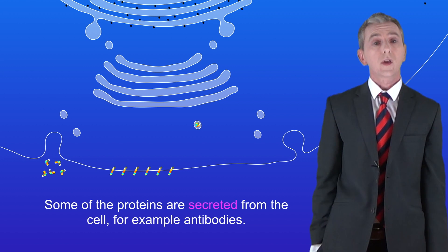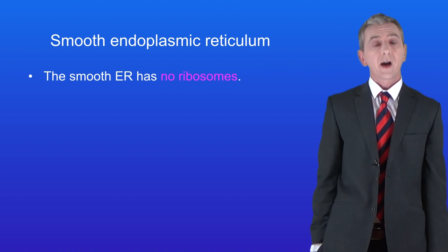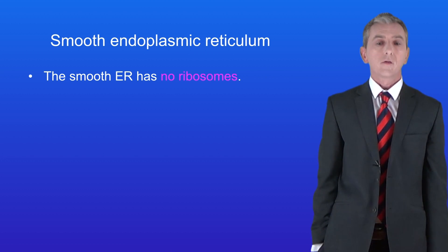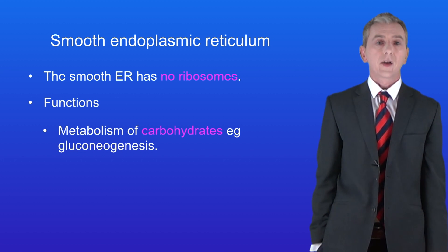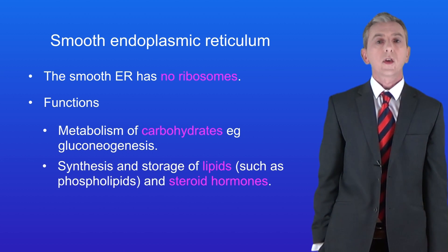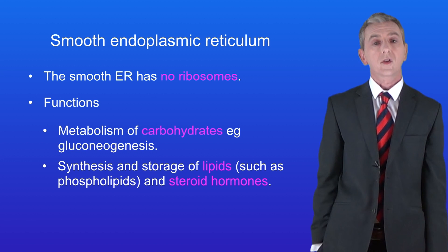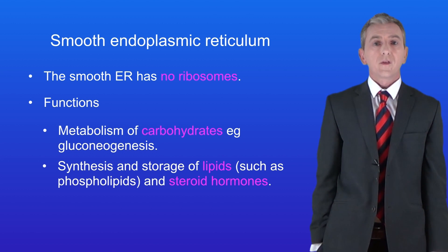Let's finish now by looking at the smooth endoplasmic reticulum. The smooth endoplasmic reticulum has no ribosomes because it does not play a role in protein synthesis. The smooth ER has a number of functions: it's involved in the metabolism of carbohydrates, for example in gluconeogenesis. The smooth ER also plays a role in the synthesis of lipids such as phospholipids, and it's involved in synthesizing steroid hormones. Because of this, we find a lot of smooth ER in cells of the ovaries and testes, which produce steroid hormones.